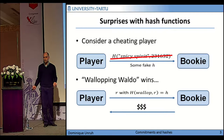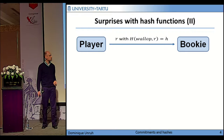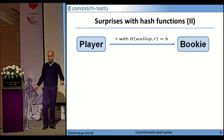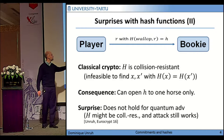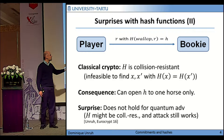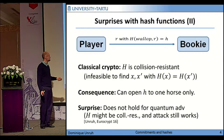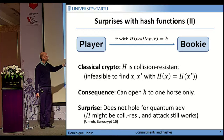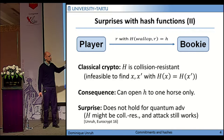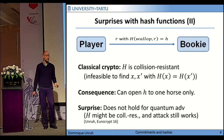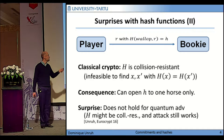Is this possible? Well, if we do not specify anything about the hash function, of course it could be possible. But I guess everyone here knows that in classical cryptography, all we need to do is to take a collision-resistant hash function. Because collision resistance means that it is infeasible to find two different inputs to this function that have the same hash. Therefore, the player cannot find one input containing Walloping Waldo and another containing Spicy Spirit that have the same hash. So the consequence is that H can be opened to one horse only, and not two.